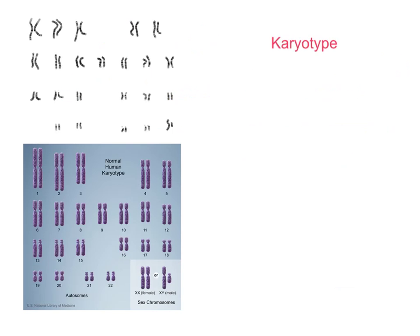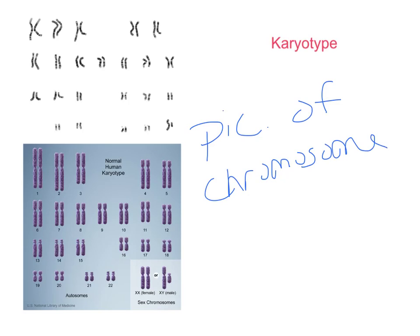We talked about karyotypes in the last video, so we're not going to spend a lot of time on them. Remember, they are the picture of the chromosomes. We stain them, those banding patterns show up with the stain, we pair up the homologous chromosomes, and line them up tallest to shortest. Pairs 1 through 22 are the autosomes — the chromosomes that code for essentially everything in our body but gender. The last pair will either be XX or XY — the sex chromosomes.